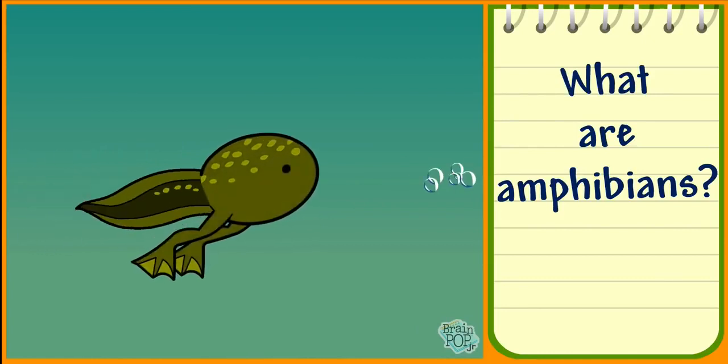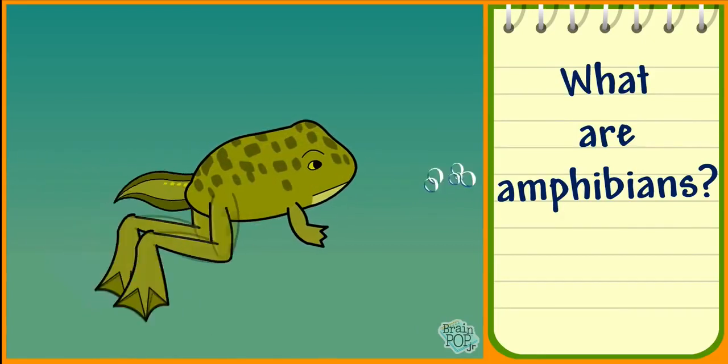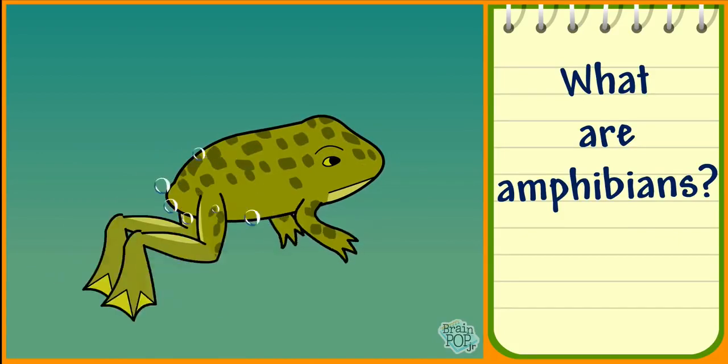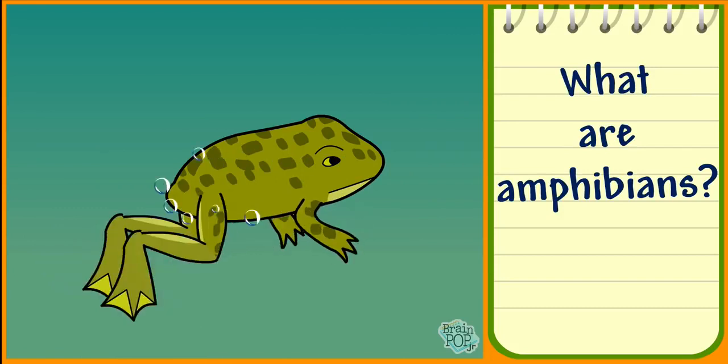As they get older, most frogs grow lungs to help them breathe on land. Many amphibians can breathe underwater through their skin, which takes oxygen out of the water.